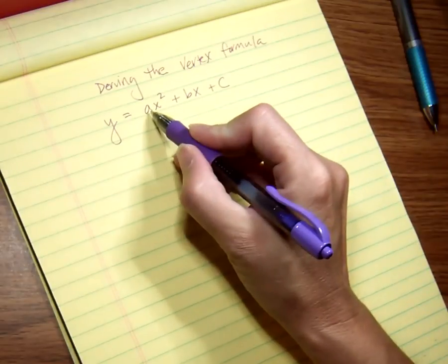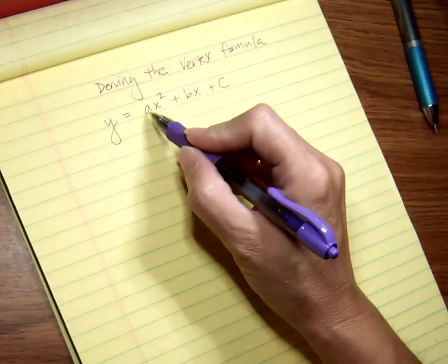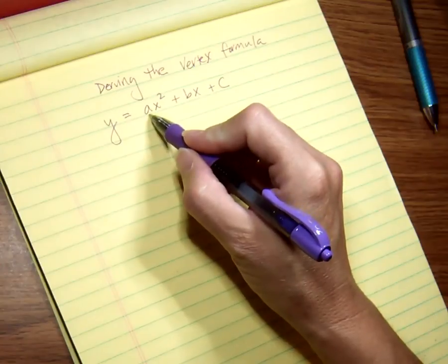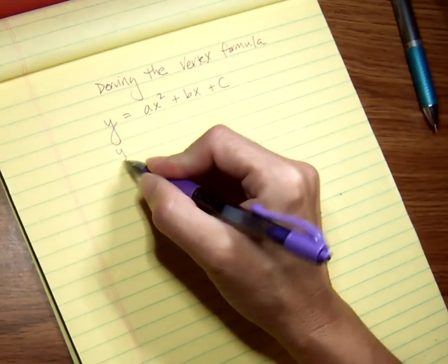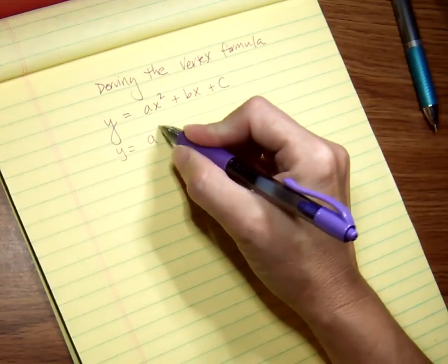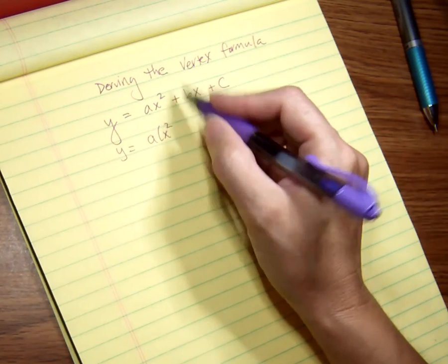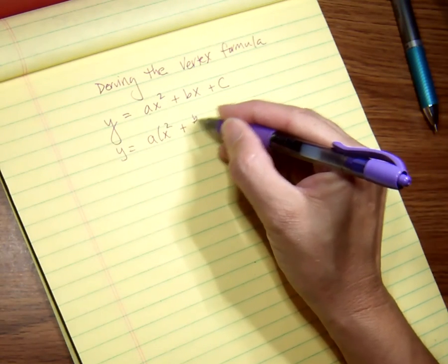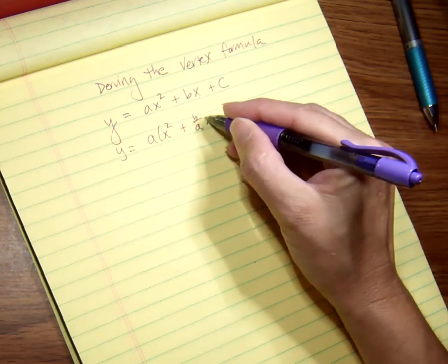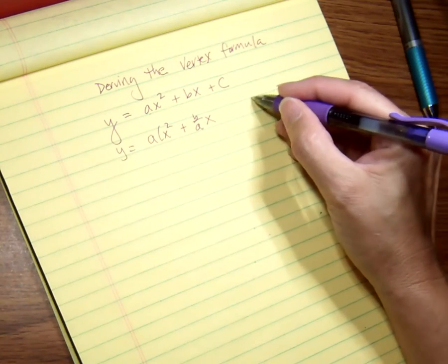The way we do that is by completing the square, but I can't do it with 'a' here. So instead of moving it to the other side, my only option is to factor it out. By factoring it out, I'm really dividing it out, so this becomes B over A.